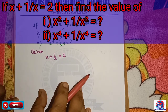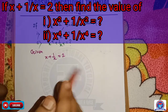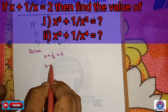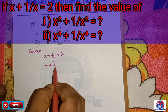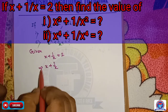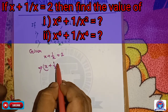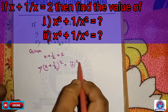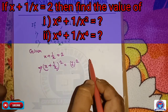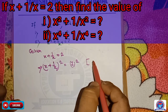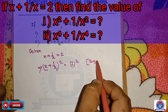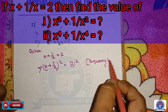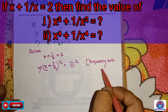Now we square both sides. We write x plus 1 by x its whole square equal to 2 its whole square, that is squaring both sides.